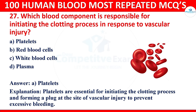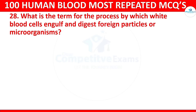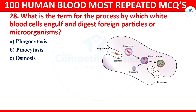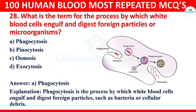Question 28: What is the term for the process by which white blood cells engulf and digest foreign particles or microorganisms? Options: phagocytosis, pinocytosis, osmosis, or exocytosis. The correct answer is phagocytosis. Phagocytosis is the process by which white blood cells engulf and digest foreign particles such as bacteria or cellular debris.